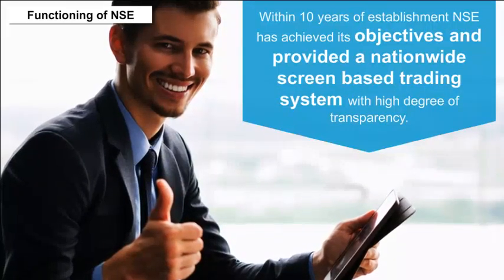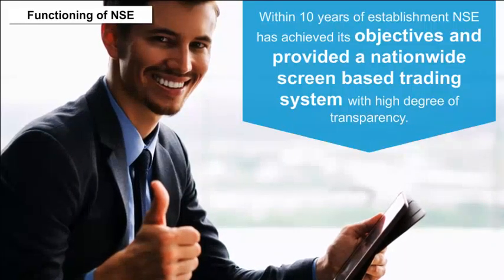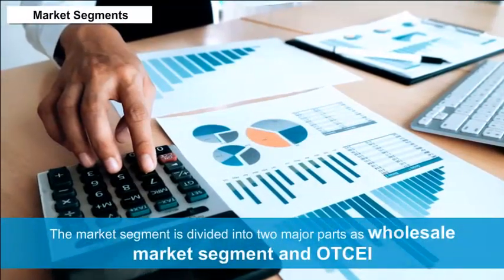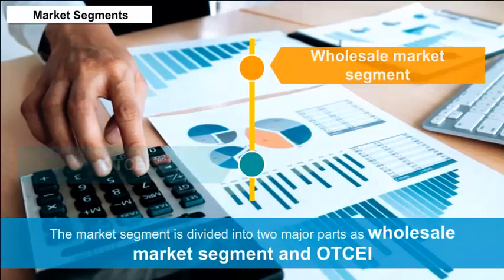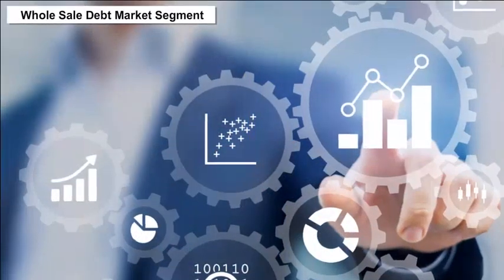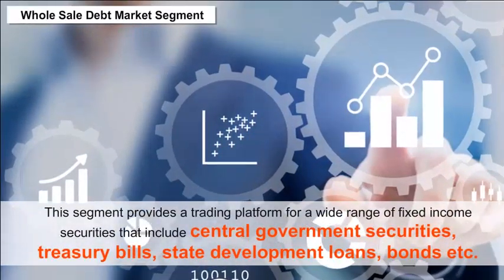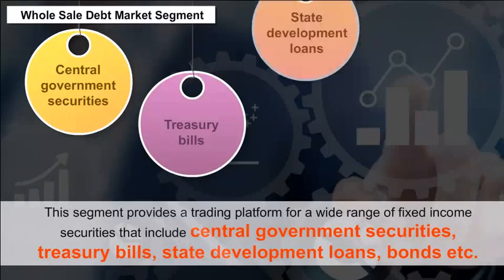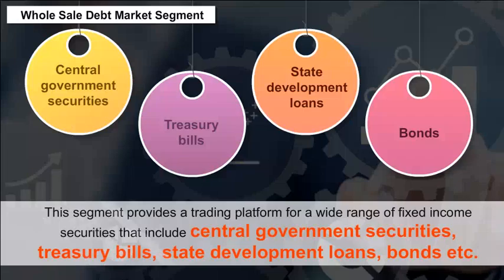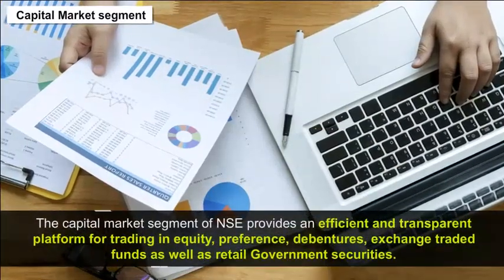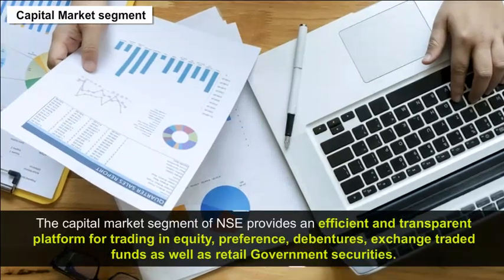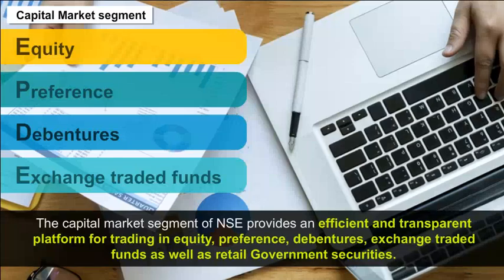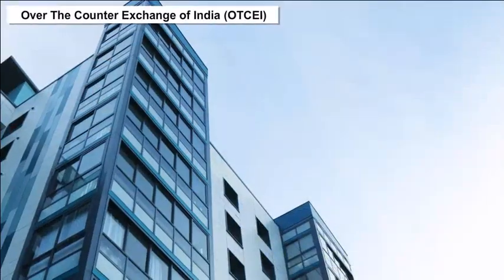Within 10 years of establishment, NSEI achieved its objective and provided a nationwide screen-based trading system with a high degree of transparency. Market Segments are divided into two major parts: the Wholesale Debt Market Segment, which provides a trading platform for a wide range of fixed income securities including central government securities, treasury bills, state development loans, and bonds; and the Capital Market Segment, which provides an efficient and transparent platform for trading in equity, preference shares, debentures, exchange-traded funds, and retail government securities.